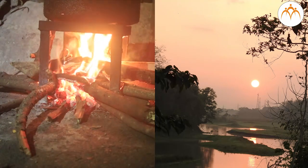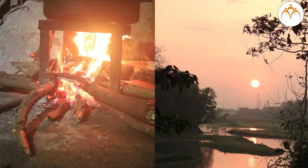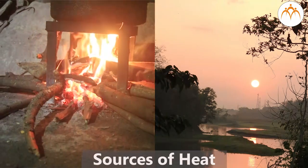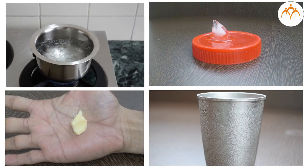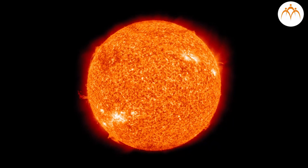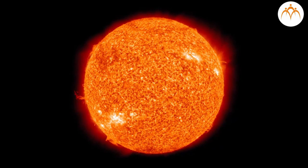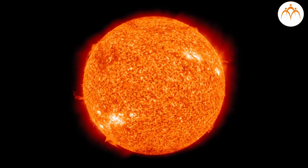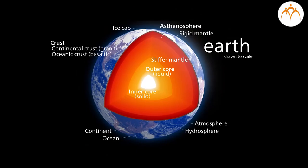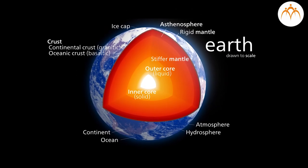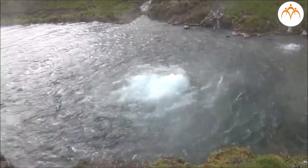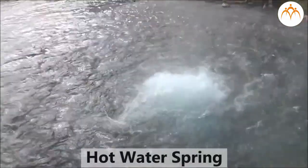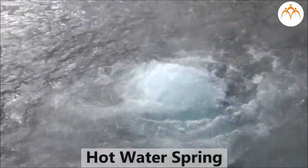In previous standard, we learned about the sources of heat, how heat is transferred and effects of heat. Sun is key to our existence and is a natural source of heat energy. Earth also has heat energy known as geothermal energy. This is found in hot water and rocks in shallow regions of earth.